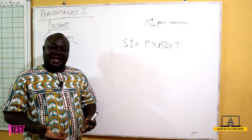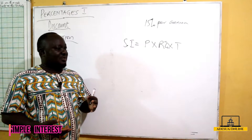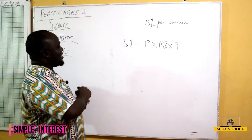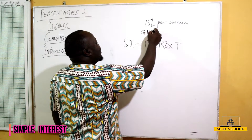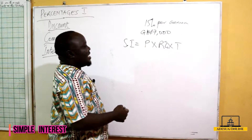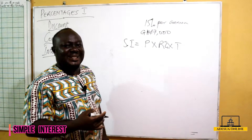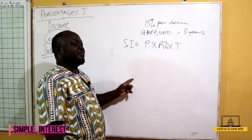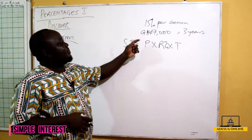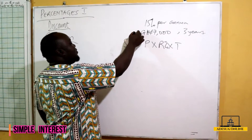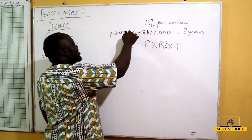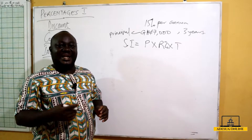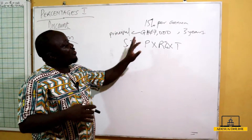Let's say I deposit money on a simple interest account at 15% per annum, and the amount I deposit is 7,000 Ghana cedis for three years. This 7,000 becomes my principal, and I can calculate my simple interest at the end of the third year.